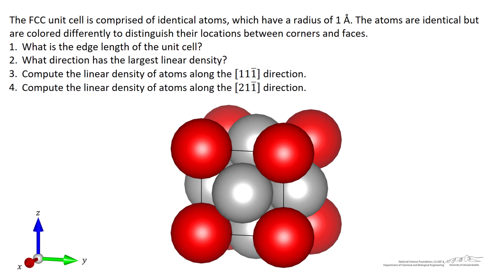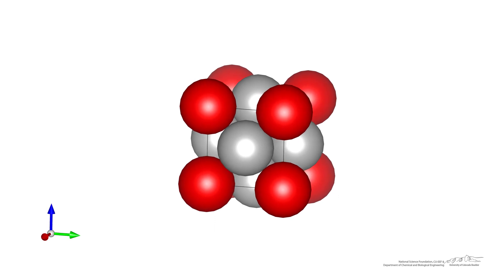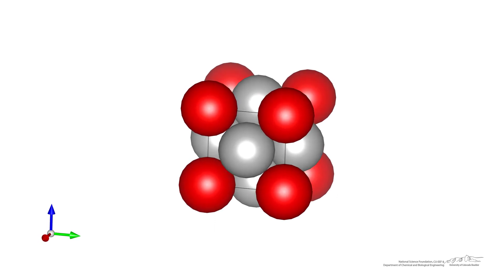The first thing we're being asked to solve is the edge length of the unit cell. The unit cell is cubic so each edge has the same length. To figure out what this length is it's helpful to look at the unit cell and we'll focus just on the front face of the cell.